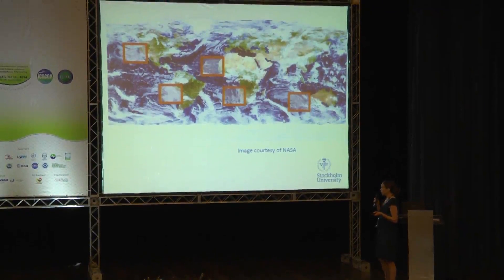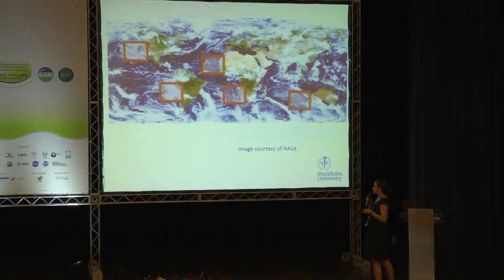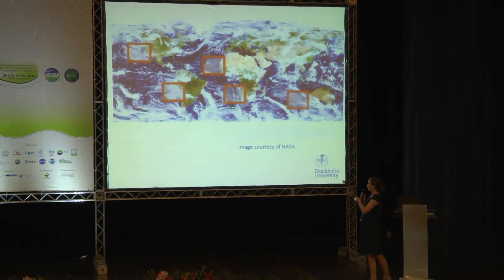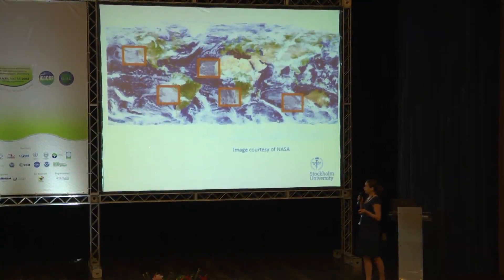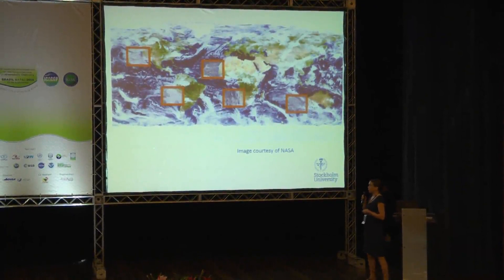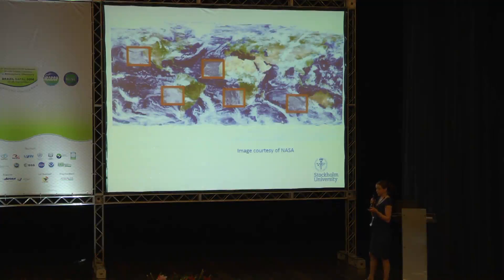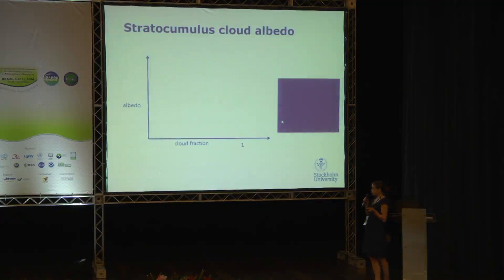We're going to focus on the subtropical marine stratocumulus clouds. I've marked five such regions on this map — we'll refer to them as Californian, Peruvian, Canarian, Namibian, and Australian. These low-latitude, low-altitude, persistent cloud decks are not only radiatively important, they're also known to be susceptible to aerosol influence and are quite often the focus of aerosol-cloud interaction studies. It's particularly interesting to evaluate models in these regions.